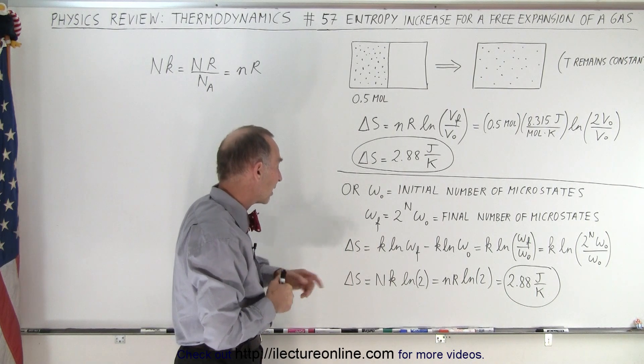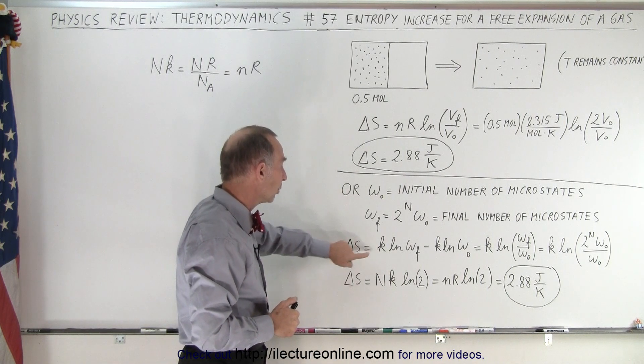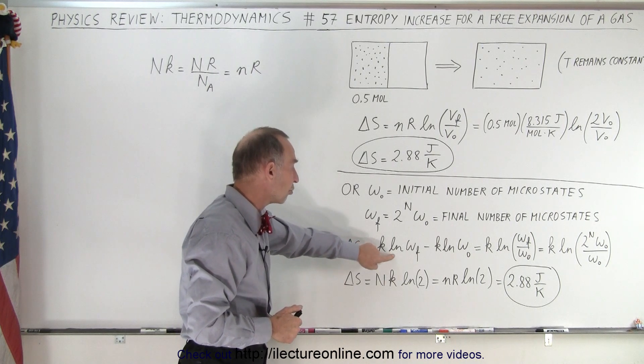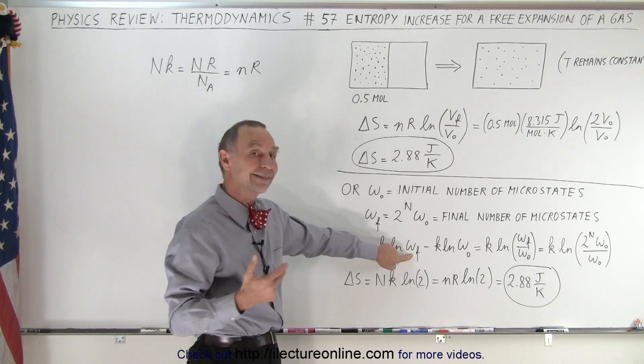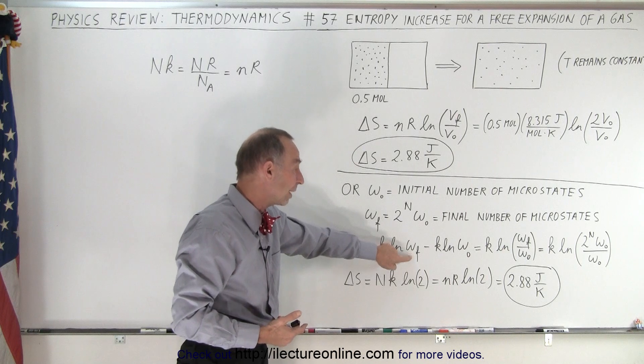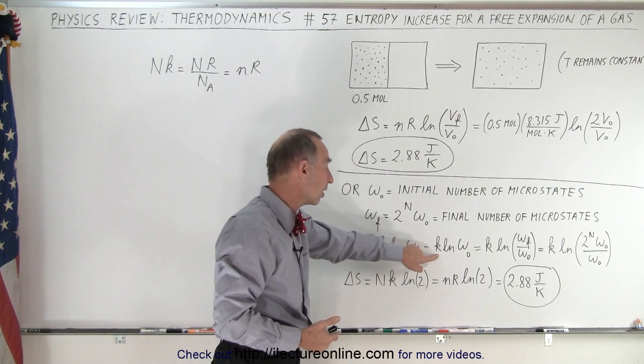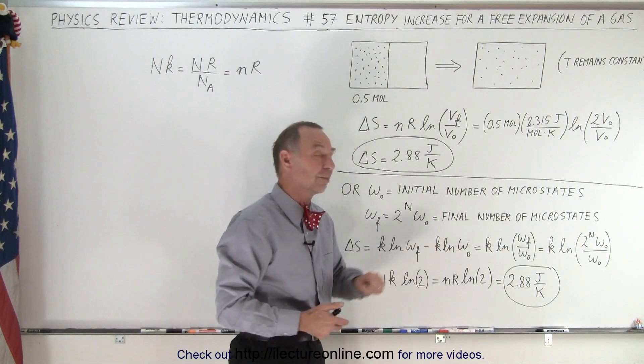So we can then say that the change in entropy will be Boltzmann constant times the natural log of the final number of microstates minus the Boltzmann constant times the natural log of the initial number of microstates.